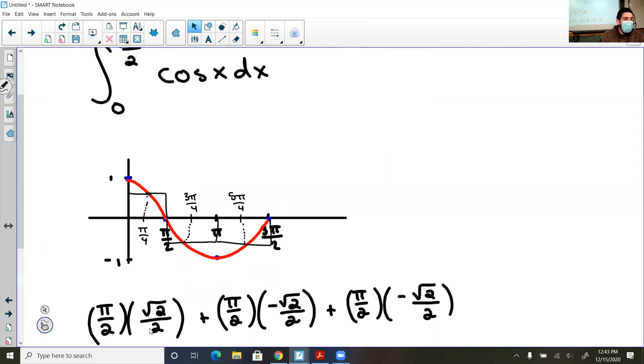So I have my dx, which is pi over 2, and I have my f of x, which is root 2 over 2. And then I plug in 3 pi over 2 and I get negative root 2 over 2 as the output. Still, the width is pi over 2. And for my third rectangle, the width is pi over 2, and when I plug in 5 pi over 4, I get negative root 2 over 2.